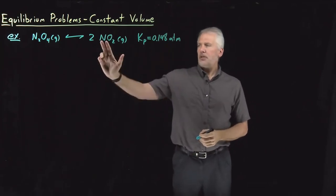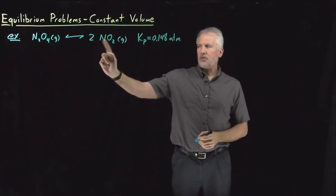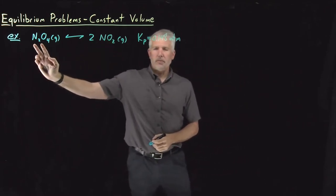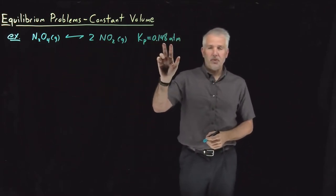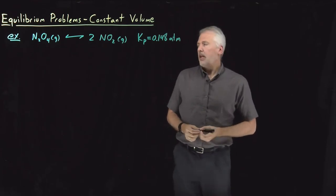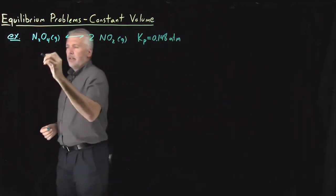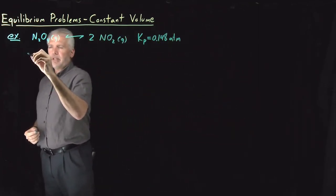So notice that has units, products over reactants. Products, there's two molecules, reactants, there's only one molecule. So the Kp has some units of pressure. If I give you some initial conditions, let's say I take a box and initially we're going to start with pressures rather than moles.